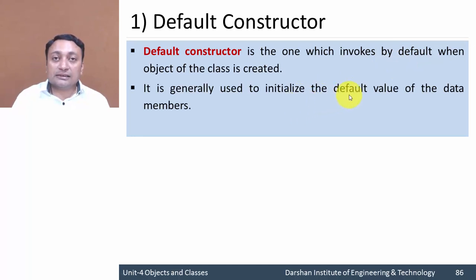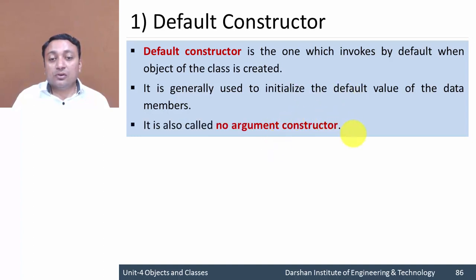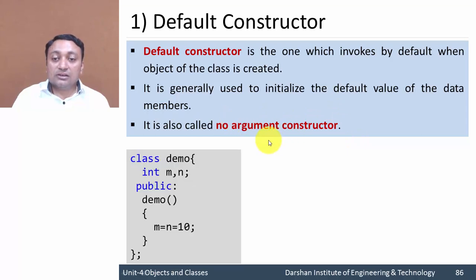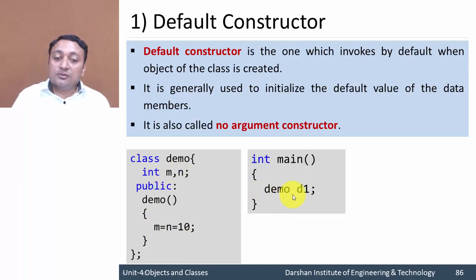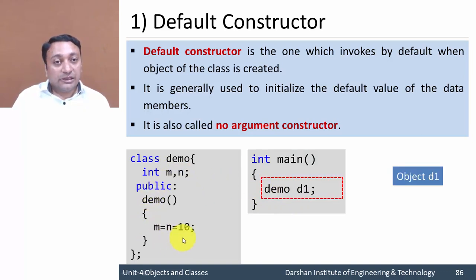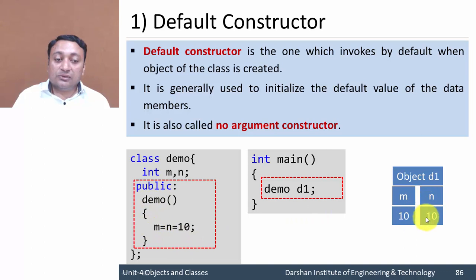The default constructor is also called a no-argument constructor because we do not pass any argument to it. Here is the example: we have class demo and with the same name we have created constructor demo. Inside that, I am assigning value 10 to members m and n. So if I create object d1, this constructor will be called automatically and assign value 10 to data members m and n.